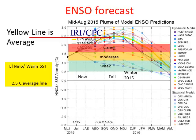What is our computer model forecast? The consensus continues to increase, with the latest forecast reaching up to 2.5 degrees — that's the average line. The consensus of computer models, just released in mid-August, shows the yellow line getting up to about 2.5 late in the fall or early winter.